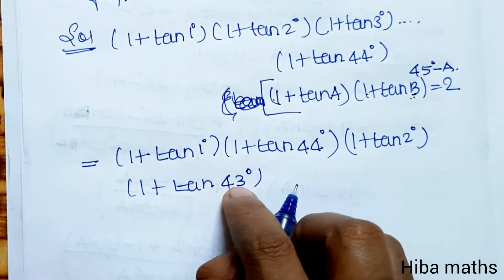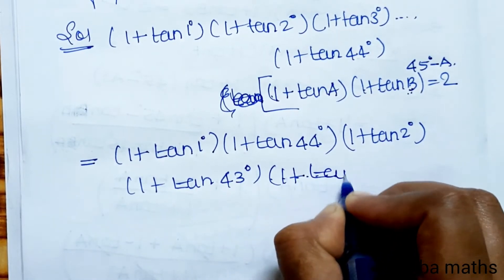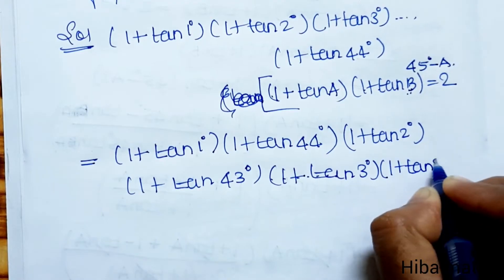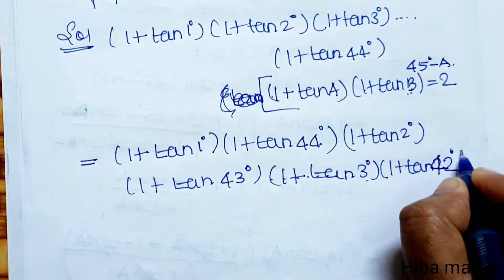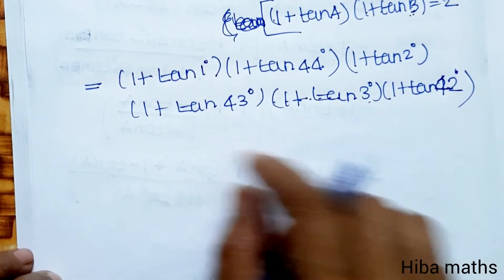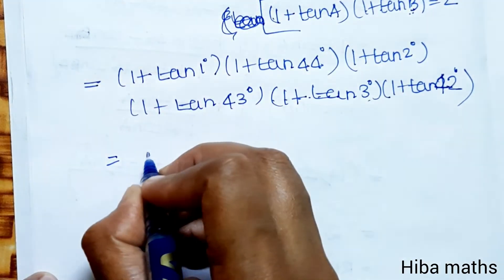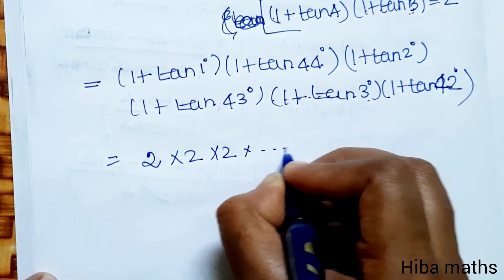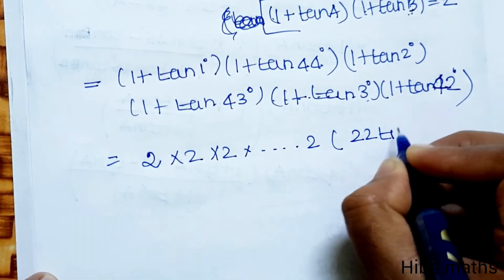Continuing, (1 + tan 3°)(1 + tan 42°) = 2, since 3 + 42 = 45. There are 44 terms in total, forming 22 such pairs, each giving a product of 2. So the total product equals 2 multiplied 22 times, which is 2^22.